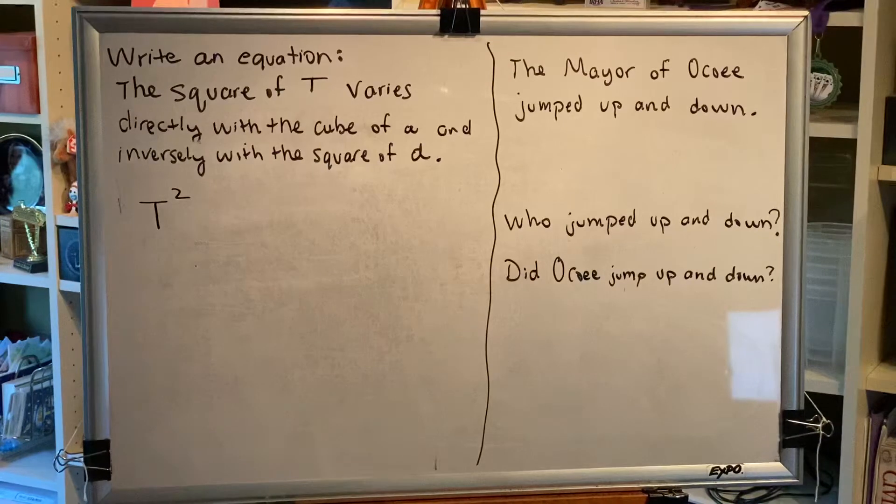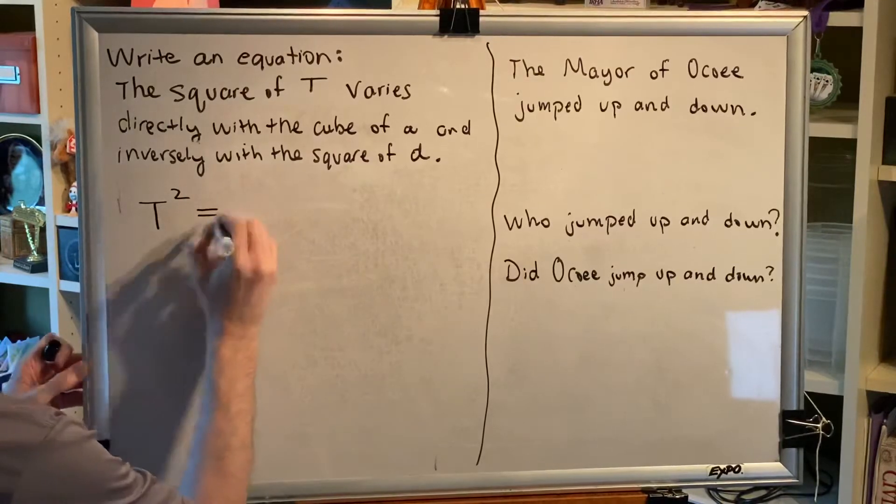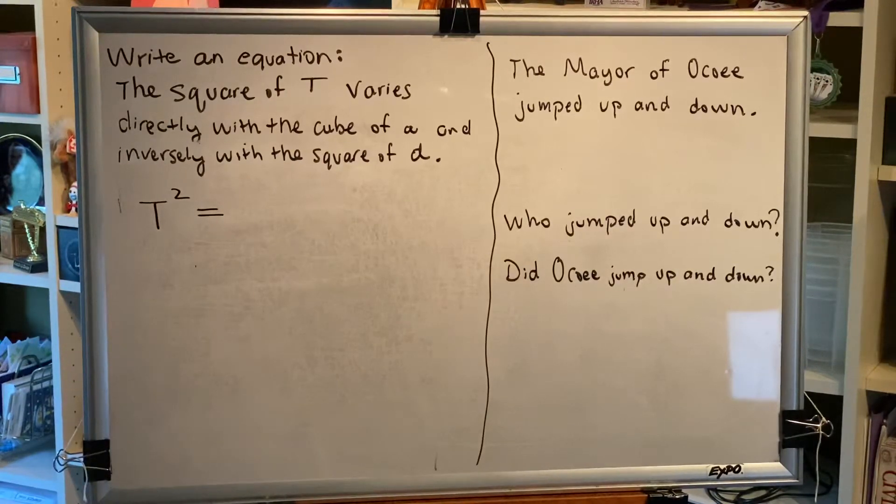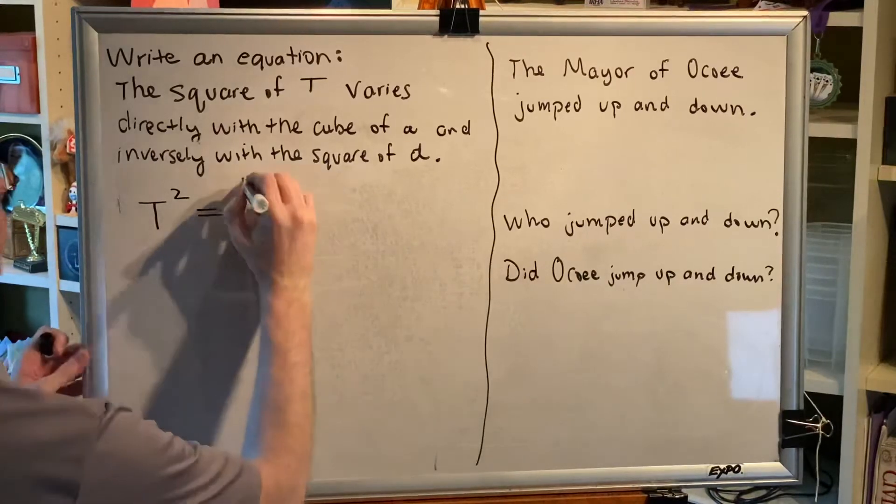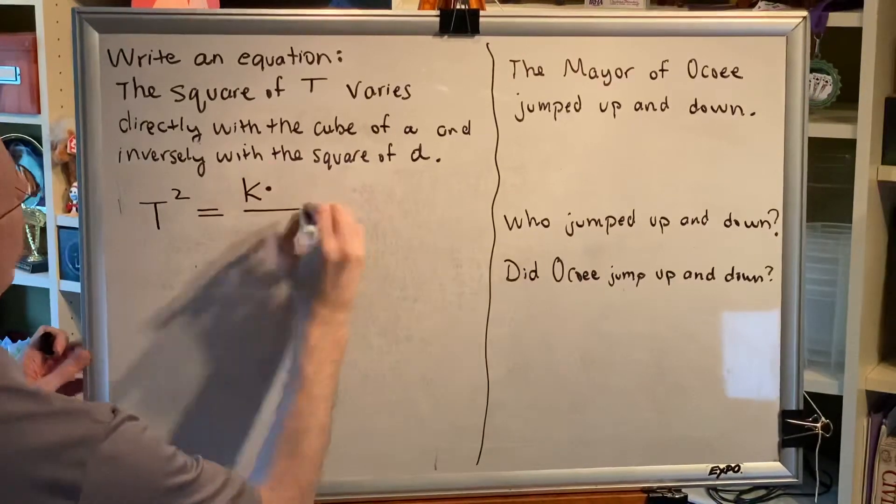So, performing the first step. Write the quantity or expression that varies followed by equals. So we write t squared equals. Step two. Write the constant of proportionality k in the numerator of a fraction.